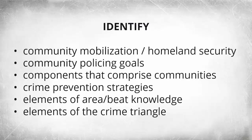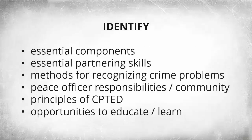You will be able to identify the following: benefits of integrating community mobilization and homeland security; community policing goals; components that comprise communities; crime prevention strategies; elements of area beat knowledge; elements of the crime triangle; essential components of community policing; essential partnering skills; methods for recognizing crime problems; peace officer responsibilities in the community; principles of crime prevention through environmental design; and resources which provide opportunities to educate and learn from the community.